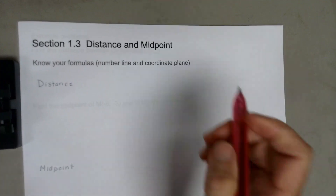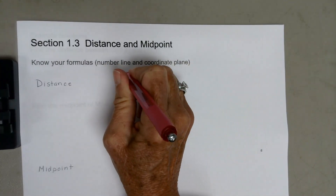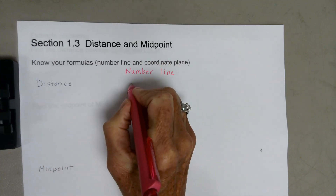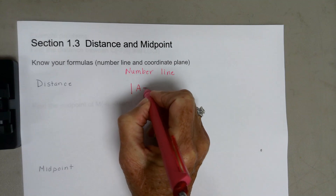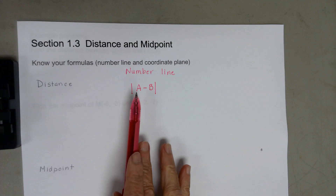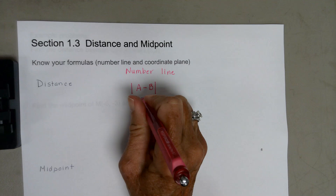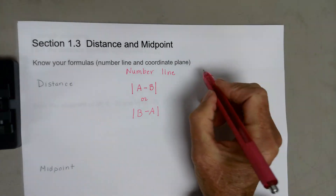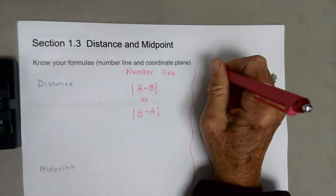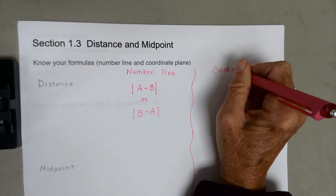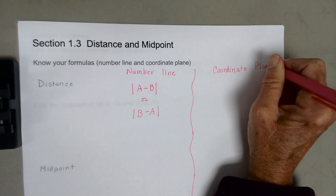Distance and midpoint: you need to know your formulas for distance on a number line and distance on a coordinate plane. On a number line, it is the absolute value of one point on the number line minus the other — so you could go |A − B| or |B − A|.